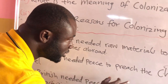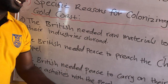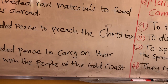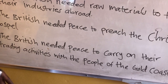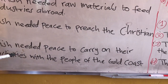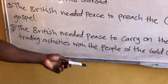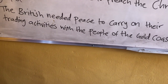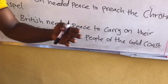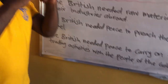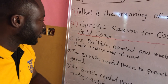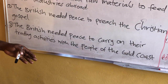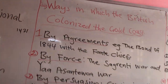They needed raw materials — like cocoa and timber — to send to their industries. Two, the British needed to preach the Christian gospel. Christianity was introduced to us by the whites; they wanted to spread the gospel. The third reason is that the British needed peace to carry on their trading activities with the people of the Gold Coast, making sure Ghana had nothing to do with France and Germany at that time, because they wanted to take total control of the administration of the country.